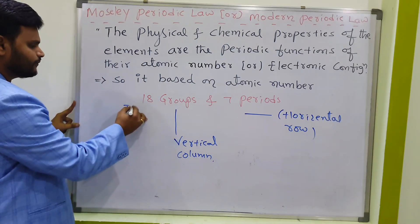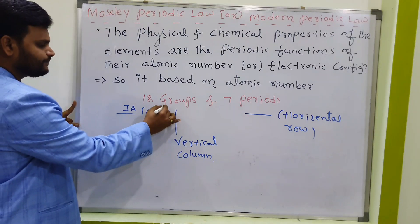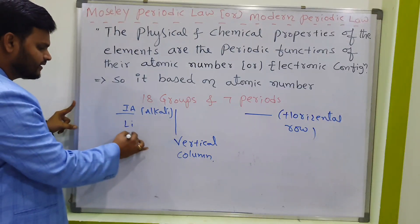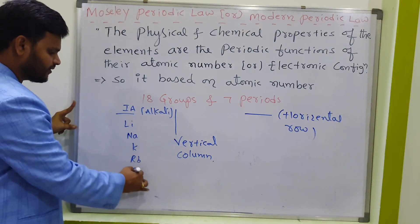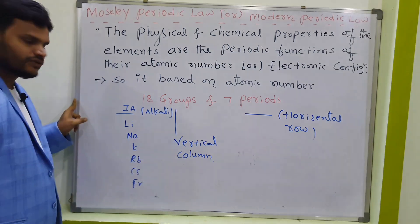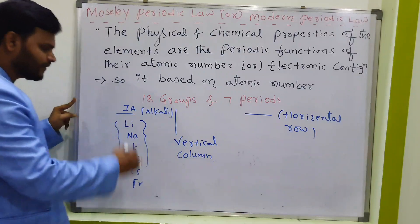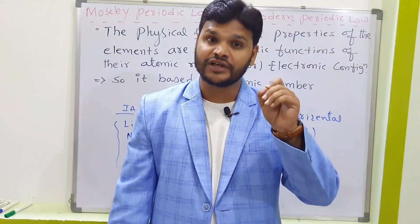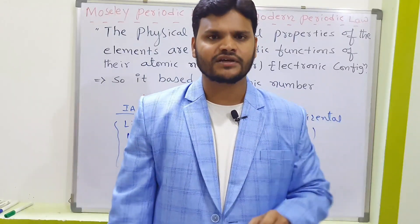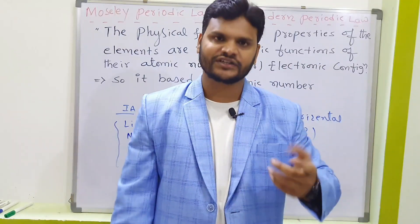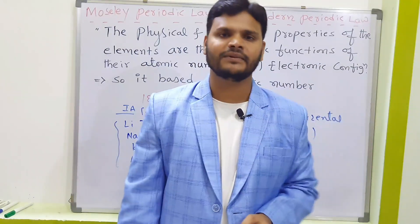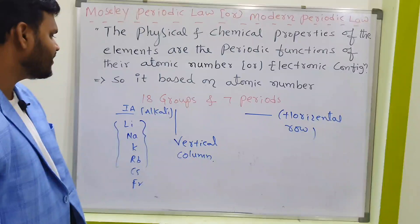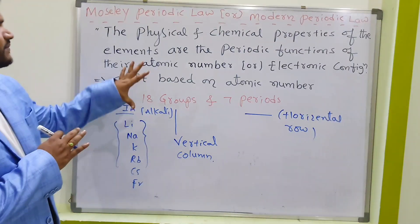When you take the first group, it contains all the column elements: lithium, sodium, potassium, rubidium, cesium, francium. All these elements have similar properties. So the periodic table arranges all known elements so that similar properties fall within the same vertical column (group) and dissimilar elements are separated into horizontal rows (periods).